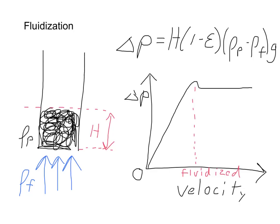In the diagram on the left, I have a picture of a bed of particles indicated by the black squiggles down here. They would have some density, rho p. There's some fluid, again a liquid or a gas, with the density of the fluid, rho f. And as it fluidizes the bed, the bed has some height to it given as height H.